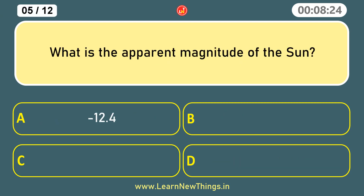What is the apparent magnitude of the Sun? Minus 26.7.